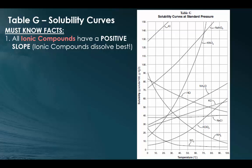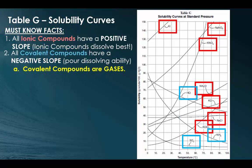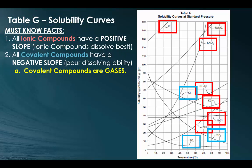So looking at table G, let's go over some of the basic facts that you need to know. The very first thing is that all of the ionic compounds, which are found here in red, they all have a positive slope. That means that ionic compounds are going to dissolve best in 100 grams of water. And just so you guys are aware, all these ionic compounds are a solid. They're all crystals at room temperature, and they all show that these solid ionic compounds increase in solubility as the temperature is increasing as well.